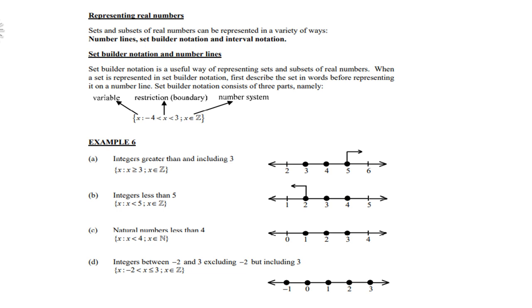Set builder notation consists of three parts: the variable x, the restriction or boundaries (you must say x lies between, for instance, negative 4 and 3), and the number system, which in this case is x element of Z, meaning integers.